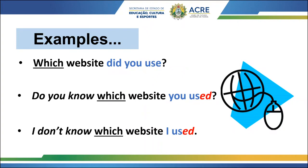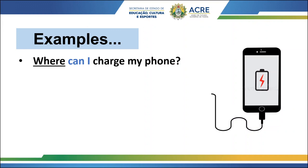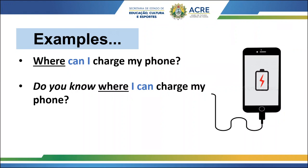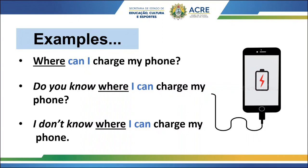'Where can I charge my phone?' This is a direct question. 'Do you know where I can charge my phone?' Look at the position of 'can' and 'I' — it's now 'I can.' And: 'I don't know where I can charge my phone.'